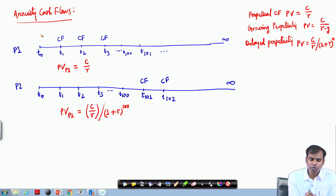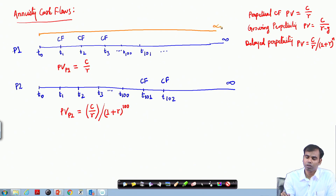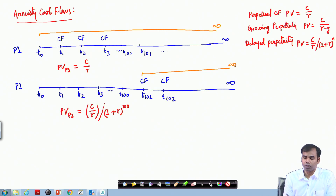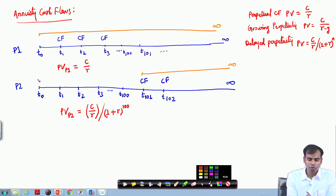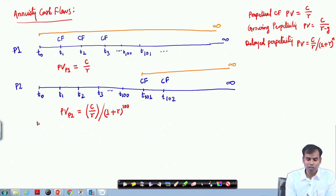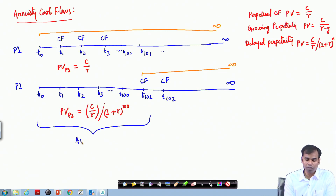In Project 1 the cash flow occurs from T1 to perpetuity; in Project 2 it occurs from T101 to perpetuity. The difference between these two cash flows is basically the cash flow generated from T1 to T100 — which is an annuity for 100 years.